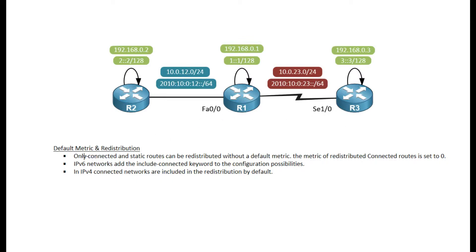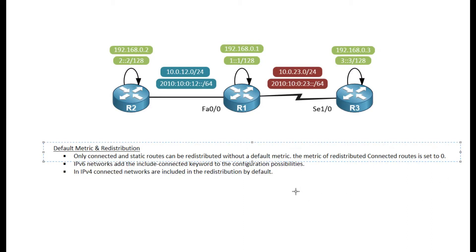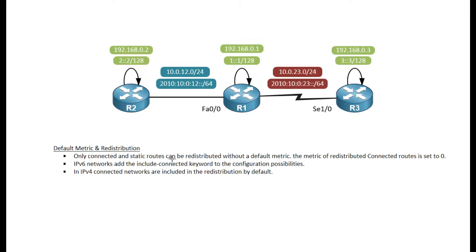Something to be aware of is that only connected and static routes can be redistributed without a default metric. If you don't specify a metric when you redistribute OSPF, RIP, BGP, or whatever it is, the routes will not arrive on router 3 — unless we set a metric for each redistribution line or set a default metric. For connected and static routes we do not need to do that.